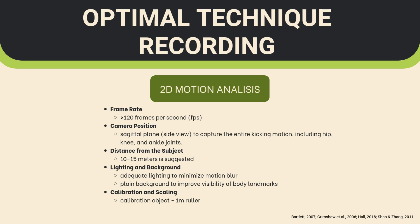This viewpoint provides a clear perspective on how each segment moves through the kick. Keeping the camera 10 to 15 meters away ensures that the full motion is captured without sacrificing detail. Proper lighting minimizes motion blur, while plain backgrounds improve the visibility of body landmarks, making it easier to track movement precisely. Calibration and scaling are also essential — a calibration object such as a one-meter ruler should be placed within the camera's view, allowing us to scale measurements and ensure reliable data. Together, these setup elements help analyze the kick accurately.